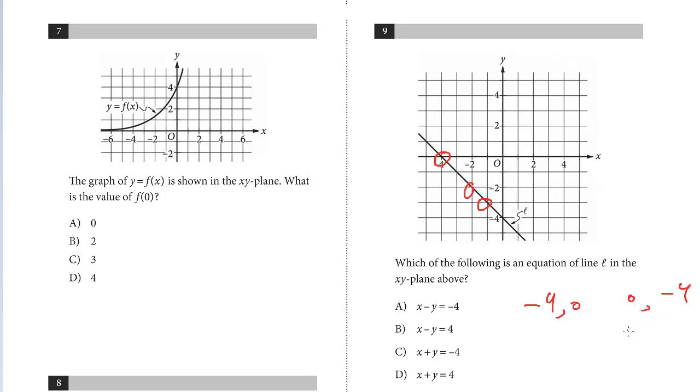Change in y over change in x. Doesn't matter which way you go, just be consistent. Change in y: 0 minus negative 4 is plus 4. Negative 4 minus 0 is negative 4. So the slope is negative 1.